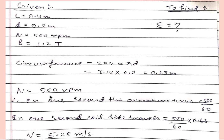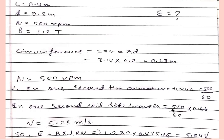Now we have N which is 500 rpm, means 500 revolutions in one minute. So what will be in one second? Simply we will divide 500 divided by 60. So this is our revolutions per second. Now in one second coil side travels how much? Revolutions per second into the circumference, so 500 divided by 60 into 0.63, we will get velocity equals 5.25 meter per second.